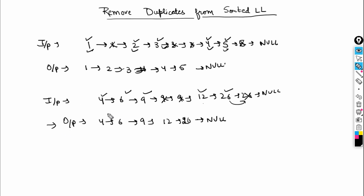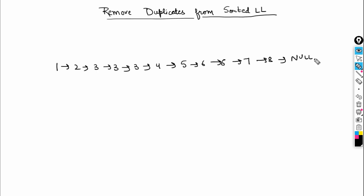Let's discuss how we can do that. Say this is our list and we need to delete duplicate elements; this is the head node. How do we know which elements are duplicates? Since it is a sorted list, all duplicate elements will be consecutive — just like these two 3s are consecutive.